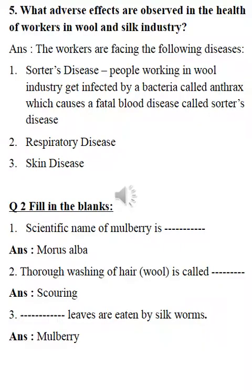Next question: what adverse effects are observed in the health of workers in the wool and silk industry? Workers are facing the following diseases. First is sorters disease — people working in the wool industry get infected by a bacteria called anthrax, which causes a fatal blood disease called sorters disease. Other diseases like respiratory diseases such as asthma and lung problems, and skin diseases, are also faced by people working in this industry.